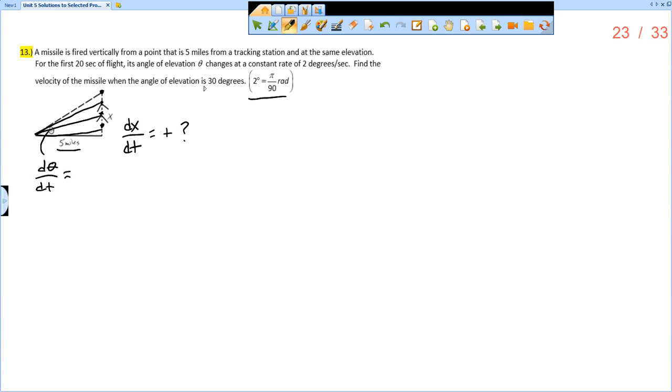Now, you are told that the angle of elevation theta changes at a constant rate of 2 degrees per second. So that is d theta dt, 2 degrees per second. Now, you are told this, that 2 degrees is pi over 90 radians.